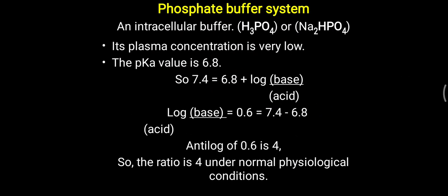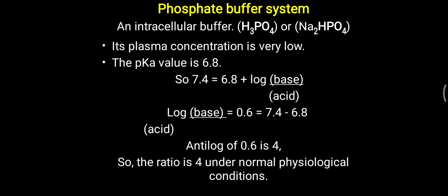The next buffer system is the phosphate buffer system, which is mainly an intracellular buffer system. Previously we saw that the bicarbonate buffer system works predominantly in the plasma extracellularly, but the phosphate buffer system is intracellular. H₃PO₄ can work over a large wide range of pH, making it very effective. H₃PO₄ can donate one H⁺ and be converted into H₂PO₄⁻. Na₂HPO₄ and NaH₂PO₄ are also working importantly inside the cell. Its plasma concentration is very low, so it is not much effective in the plasma. The pKa value of the phosphate buffer is 6.8.